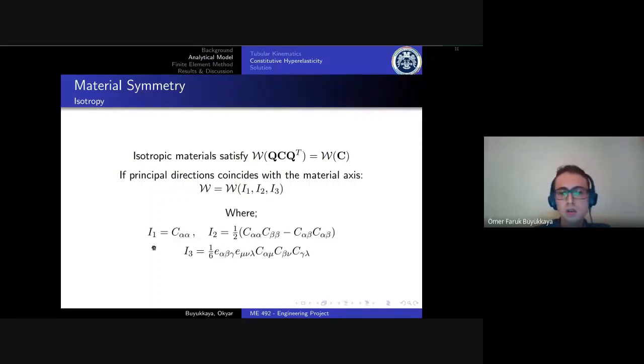The first invariant is the trace of C. The second invariant is the difference between squares of the traces and the traces of the squares divided by two. And the third invariant is simply the determinant of C.